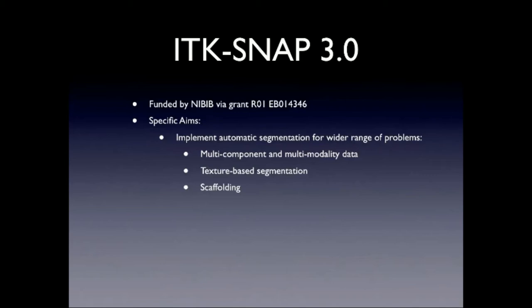Another feature is scaffolding. As John alluded to during the manual segmentation talk, sometimes it's useful when you want to segment something like the liver — you segment it from a few slices in each orientation, get a rough idea of the three-dimensional shape, fit a rough model to that, and then use those models to constrain your automatic segmentation so it adheres to that scaffold.